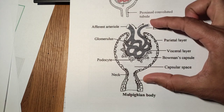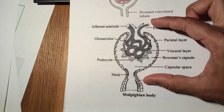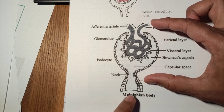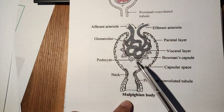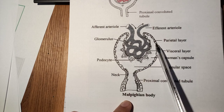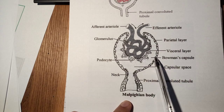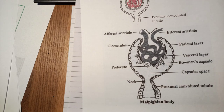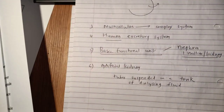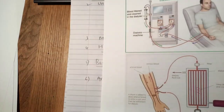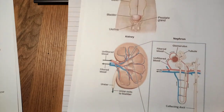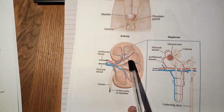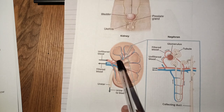This whole structure — Bowman's capsule and glomerulus — is also called the Malpighian body. You may be asked this in entrance exams. The Malpighian body consists of the glomerulus and Bowman's capsule, with its inner visceral and outer parietal layers. We have now seen how blood is filtered and passes through a system of tubes. The collecting ducts collect the urine and pass it to the renal pelvis.